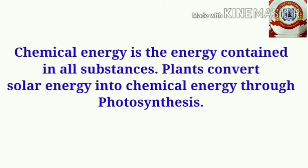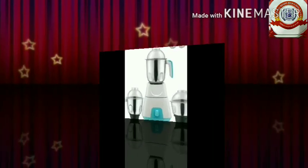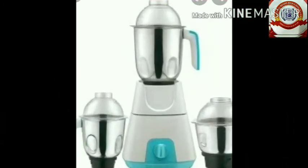Chemical energy is the energy contained in all substances. Plants convert solar energy into chemical energy through the process of photosynthesis. Have you ever noticed the different forms of energy produced when a mixer grinder is operated?